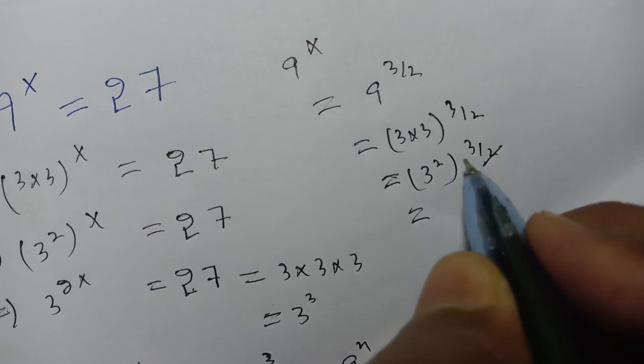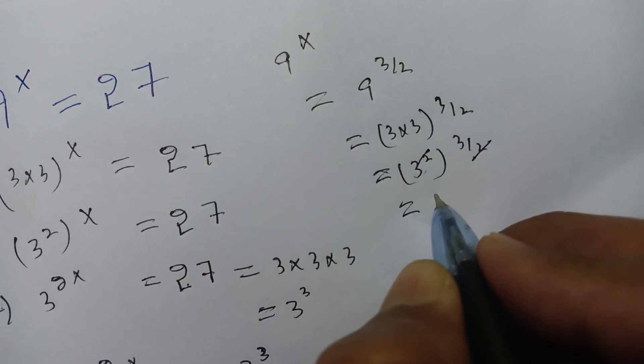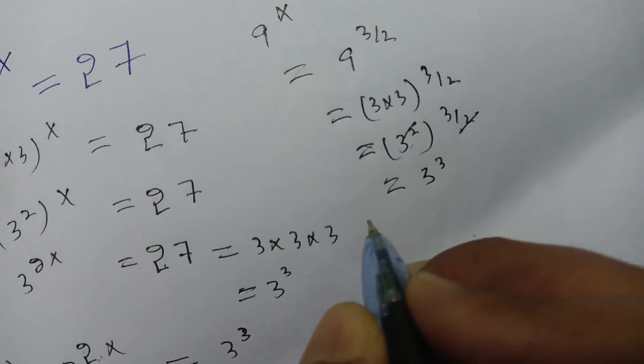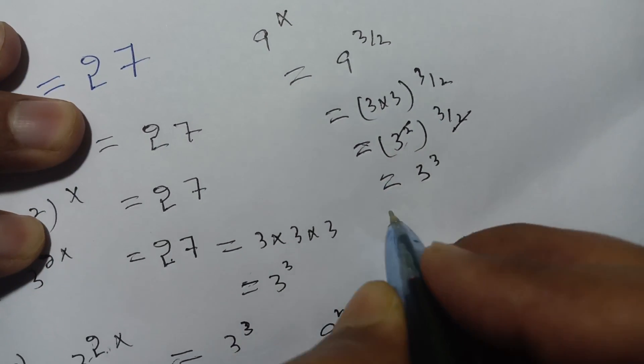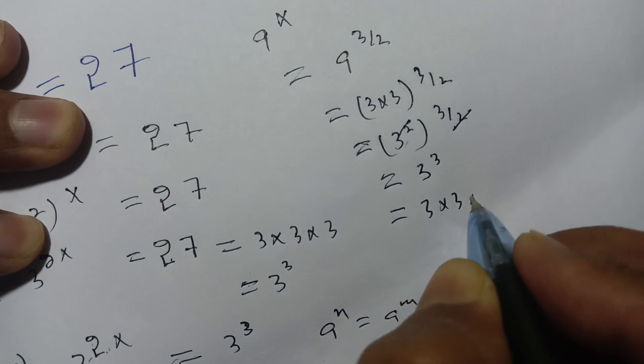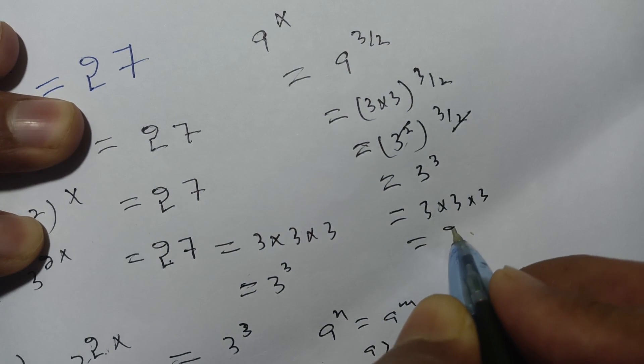We can cancel out this 2. And the remaining part is 3 to the power 3. And 3 to the power 3 can be written as 3 times 3 times 3. It is 27.